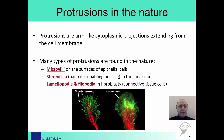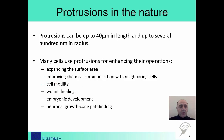You can find many types of protrusions in nature. They are found on the surface of the epithelial cells or in the inner ear, and also in the connective tissue cells. A protrusion can be as long as 40 micrometers and the radius might be several hundreds of nanometers. They can be used to expand the surface area for better reception of chemical signals from neighboring cells, for cell motility, healing wounds, embryonic development, and neuronal growth cone pathfinding.